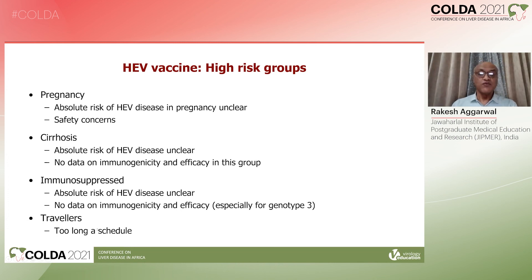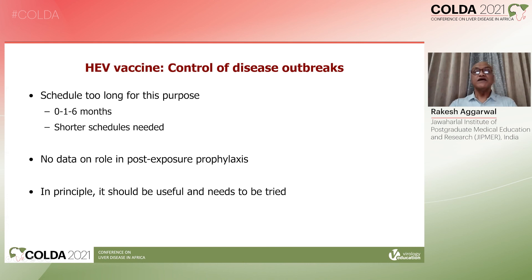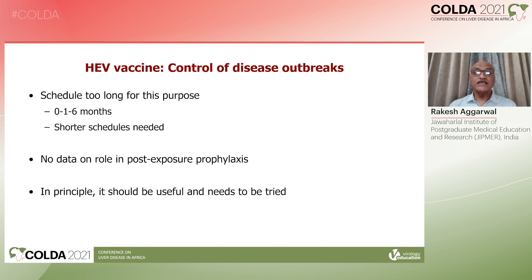For travelers, a six-month schedule is a challenge because nobody knows in advance whether they want to travel six months later — except people who travel regularly throughout the year, who could get the vaccine. An interesting concept is to use the vaccine to control an ongoing disease outbreak. On the face of it, a six-month schedule seems too long, but recently shorter schedules have been tried and they do induce antibodies. We also don't have data on whether the vaccine prevents infection if given after exposure has already occurred. However, in principle the vaccine should be useful given the fairly long incubation period, and this needs to be evaluated either in practice or as research during outbreaks.